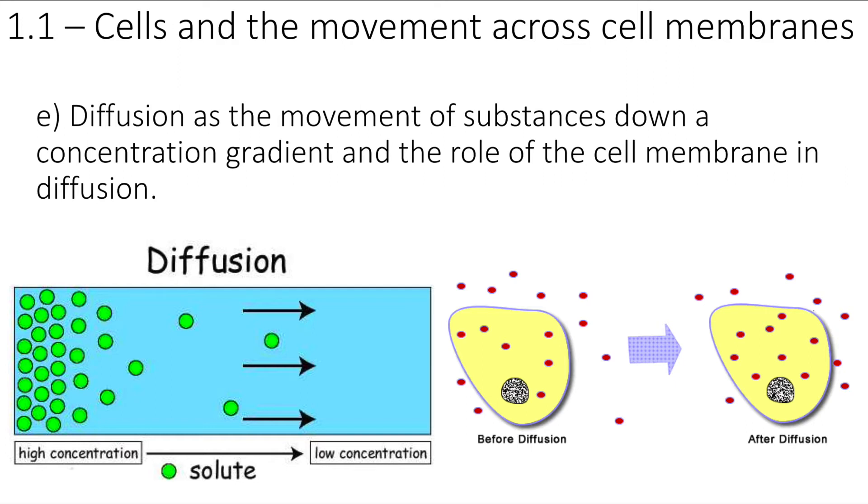We're moving on to the movement across cell membranes part today by looking at diffusion as the movement of substances down a concentration gradient and the role of the cell membrane in all of this.